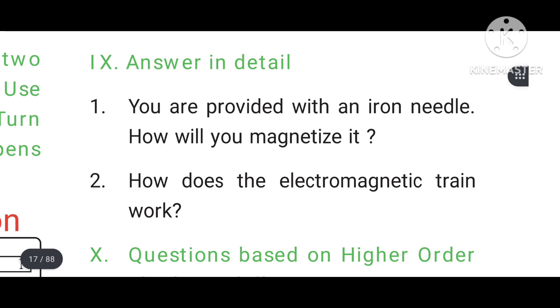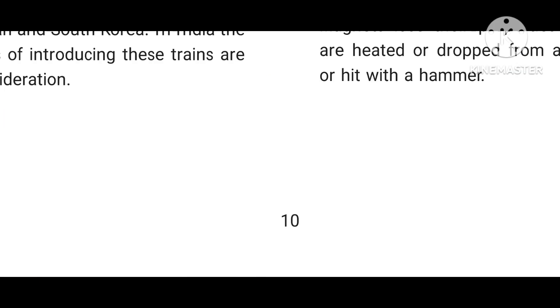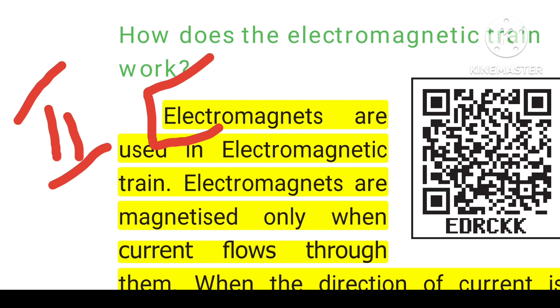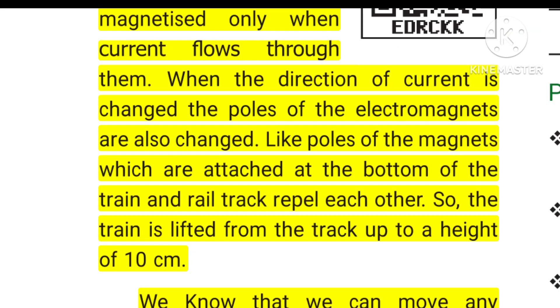Second question: How does the electromagnetic train work? Answer: Page number 10, first line. Electromagnets are used in electromagnetic trains. Electromagnets are magnetized only when current flows through them.